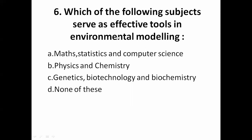Which of the following subjects serves as an effective tool in environmental modeling? The options are: A — Maths, Statistics and Computer Science; B — Physics and Chemistry; C — Genetics, Biotechnology and Biochemistry; D — None of these. The correct answer is A — Maths, Statistics and Computer Science.